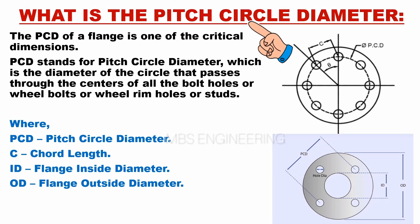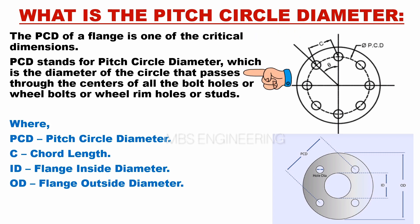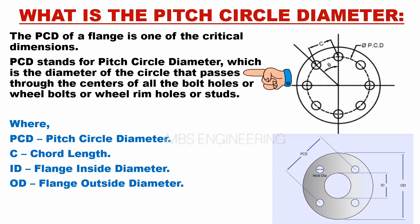We will understand what is the pitch circle diameter. The PCD of a flange is one of the critical dimensions. PCD stands for pitch circle diameter, which is the diameter of the circle that passes through the centers of all the bolt holes, wheel bolts, wheel rim holes, or studs. PCD is the pitch circle diameter of the flange.